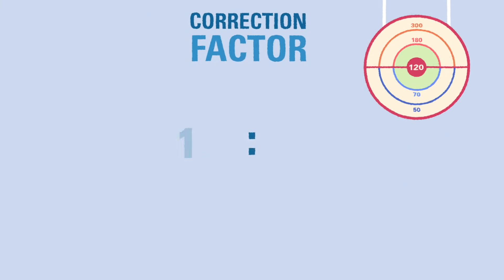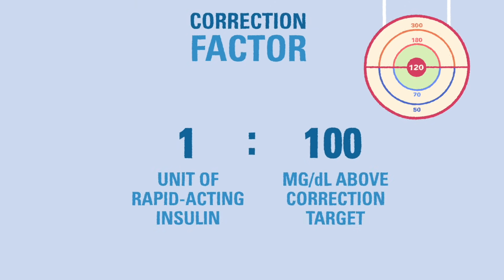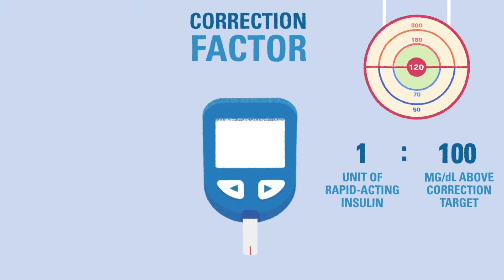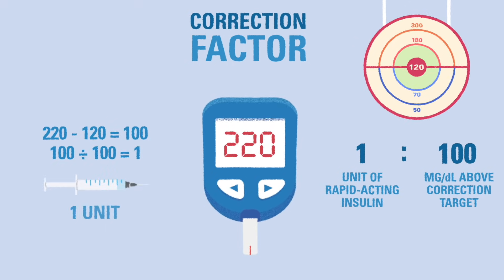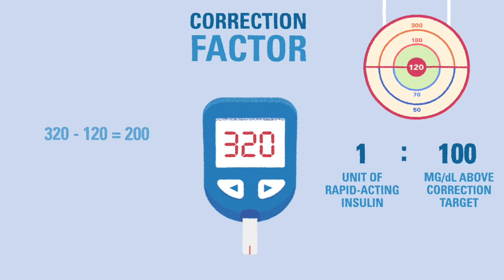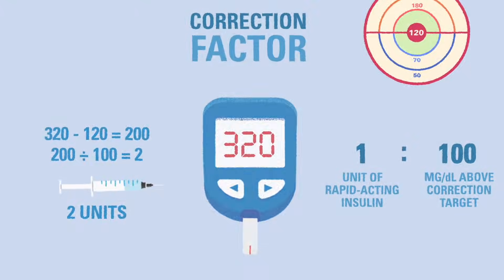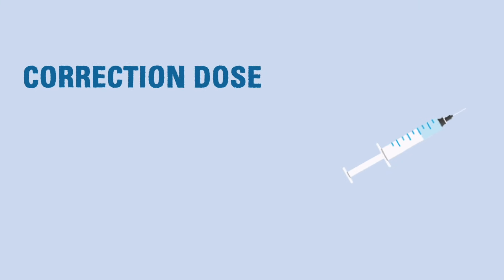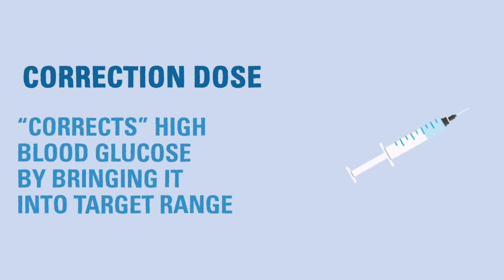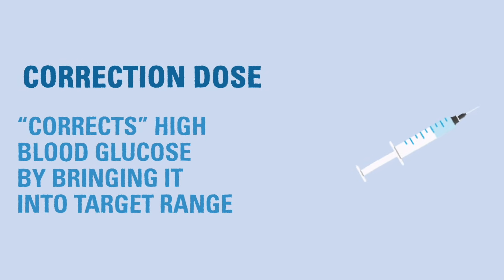Remember, a correction target is just for math purposes — we are happy whenever the blood glucose is between 70 and 180. For example, if a child's correction target is 120 and their correction factor is 1 to 100, they would need one unit of insulin for every 100 points their blood glucose was above 120. If their blood glucose was 220, they would give one unit; for a result of 320, they would give two units. We call these correction doses.